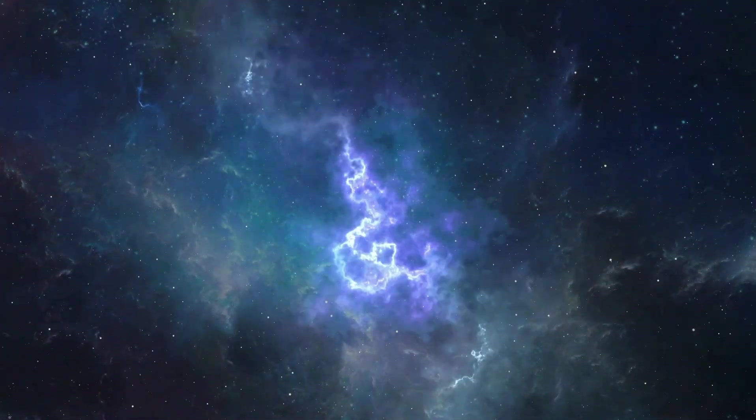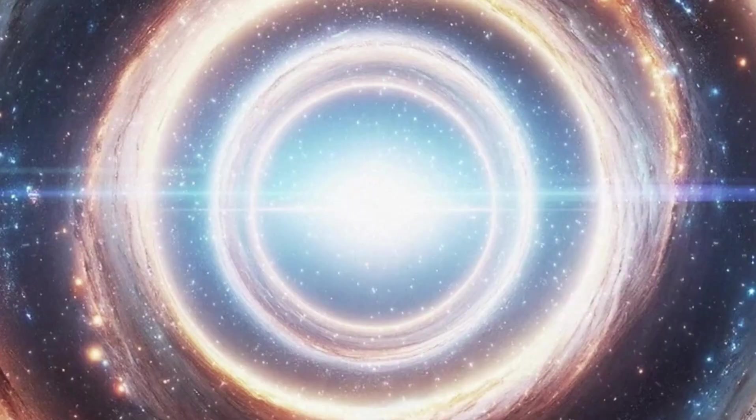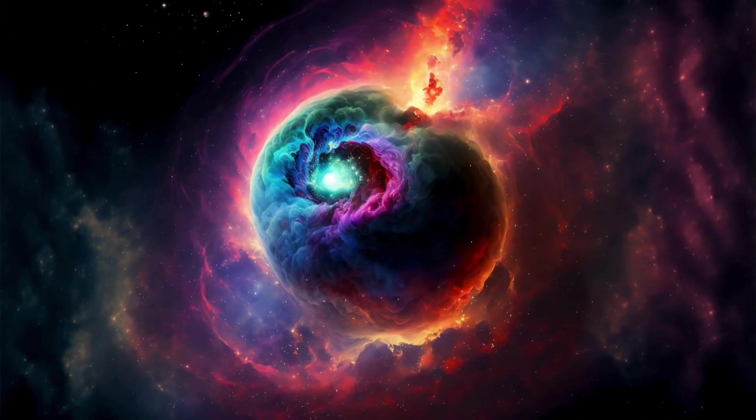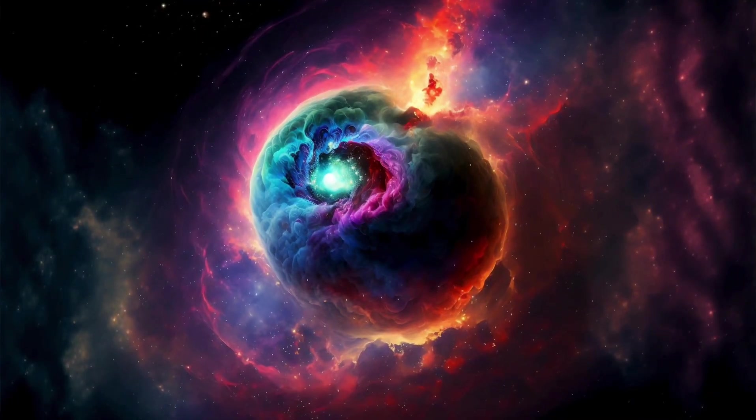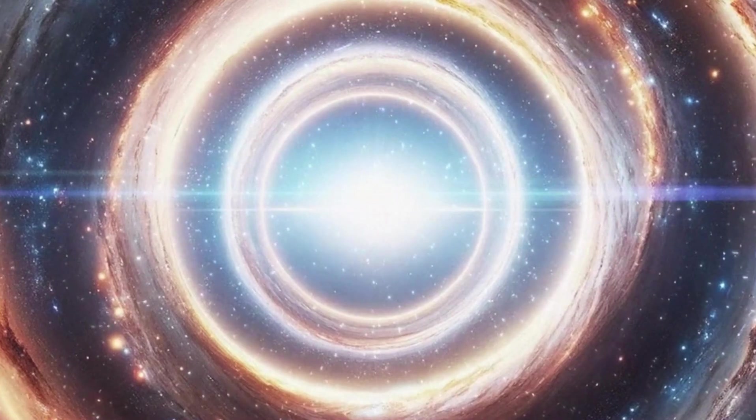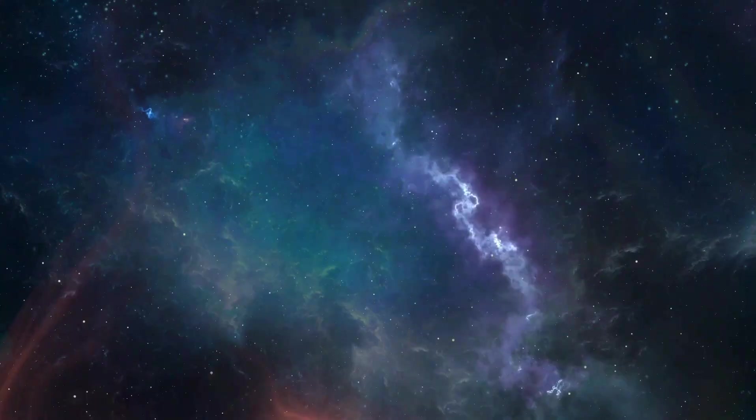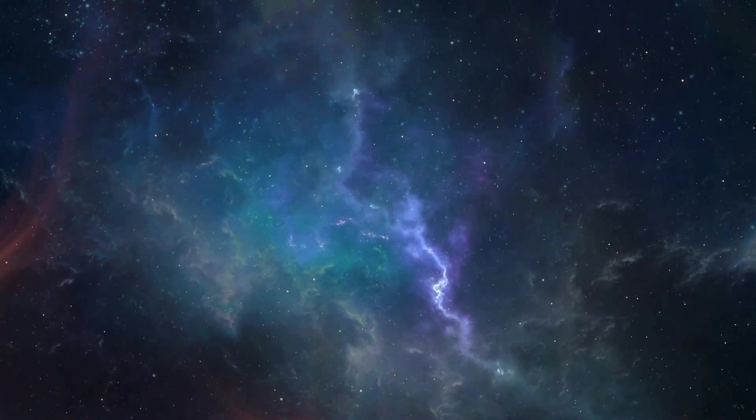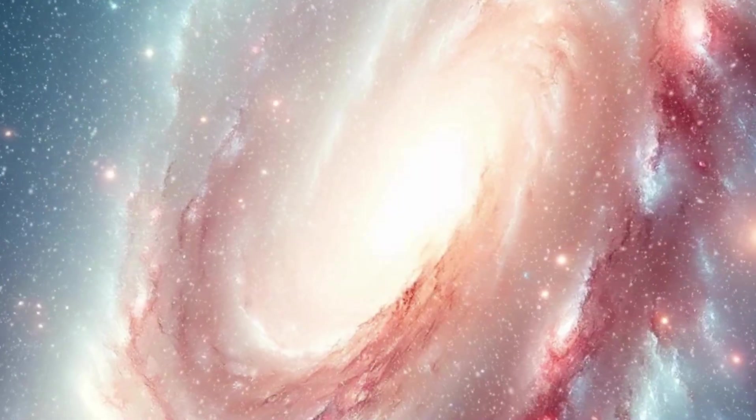The next question was how they could photograph something so big. If you weren't already impressed by how it was discovered, wait till you hear what it took to make this photograph possible. The Event Horizon Telescope, EHT, was an international collaboration to achieve a goal that was impossible at the time: taking a photo of a black hole. The EHT brought together eight different observatories around the world, combining their imaging power to create a virtual Earth-sized telescope.